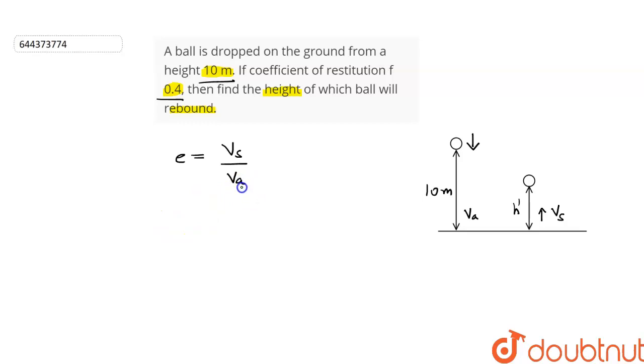Let's calculate the values of approach velocity and velocity of separation separately. As the ball is dropped from this point, the initial velocity U is 0. So, we can use the formula V square minus U square is equal to 2GH.